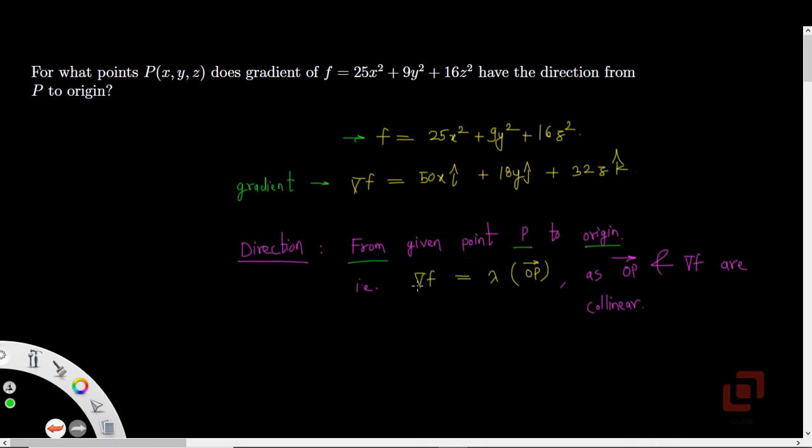Which means the gradient vector we obtained should be collinear with the position vector of point P, which is OP where O is the origin.